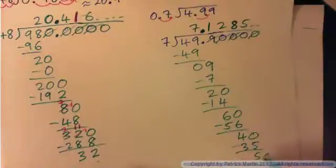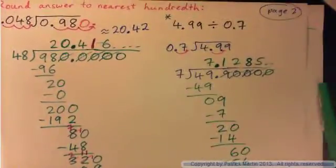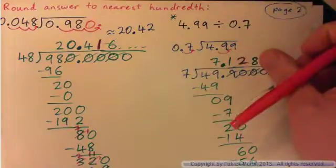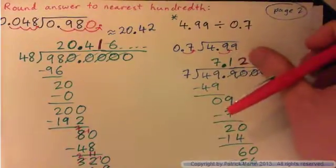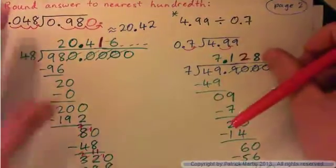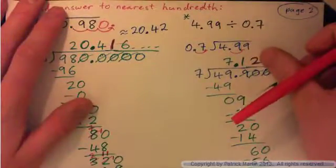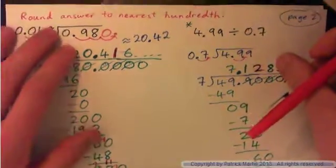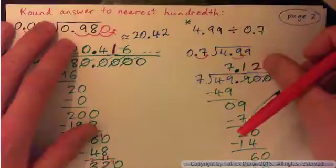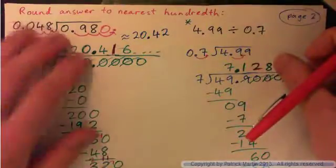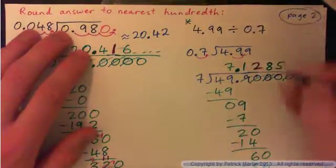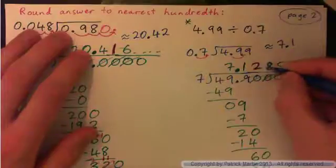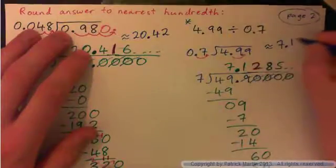You can keep going, but the point is: if you're asked to round to the nearest hundredth, you should go to at least the thousandths and then round. Don't stop at the hundredths digit — keep going to the thousandths so you know whether to round up or down. When this became an 8, we rounded up. So it's approximately 7.13.